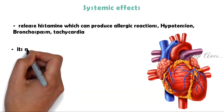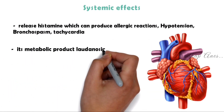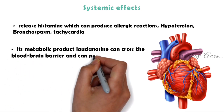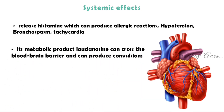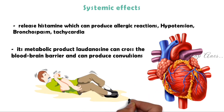At higher doses, its metabolic product laudanosine can cross the blood-brain barrier and produce convulsions. Due to these disadvantages, Cisatracurium is preferred.